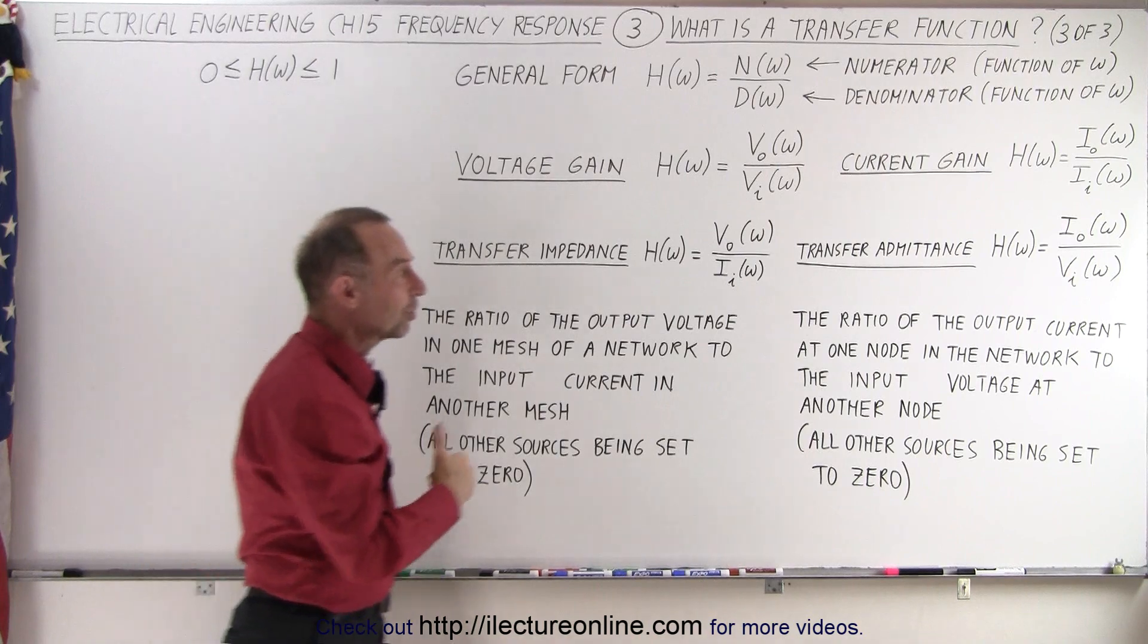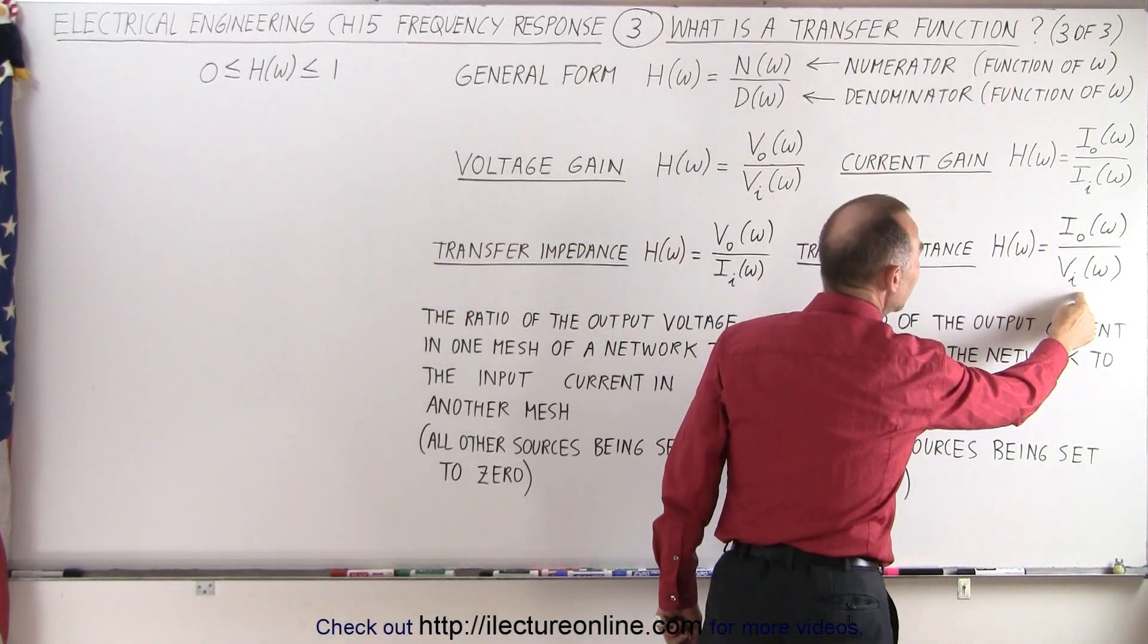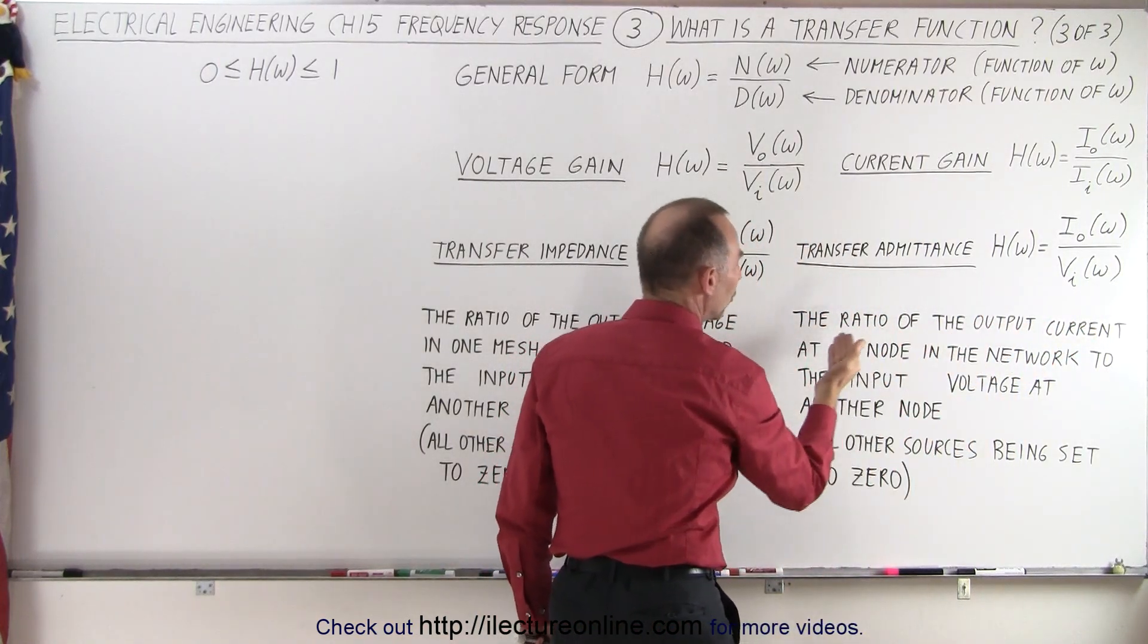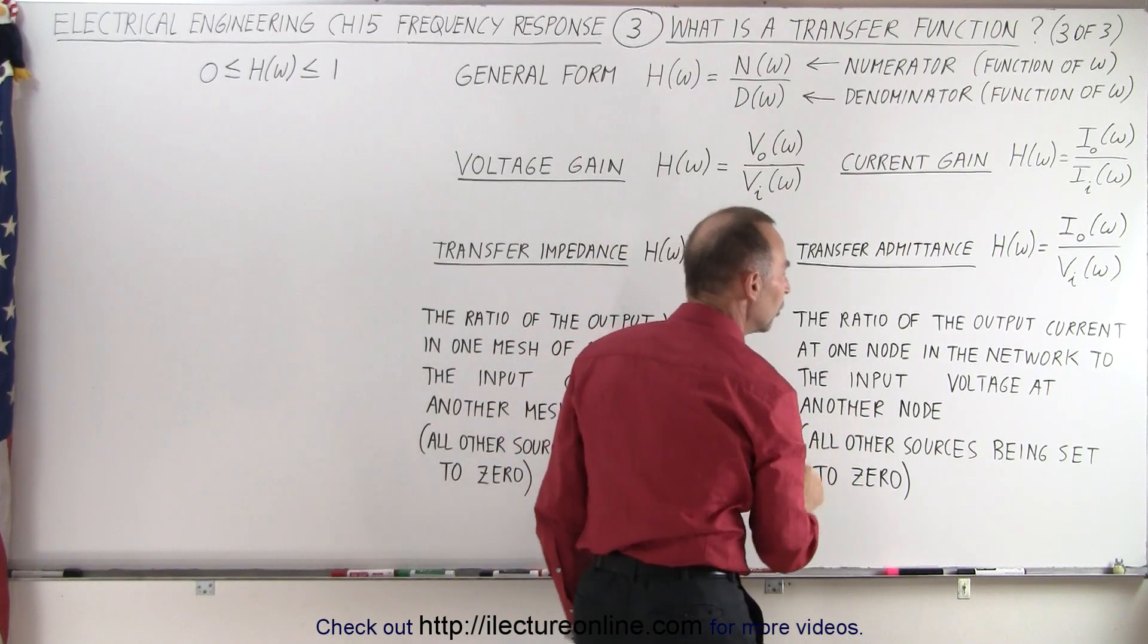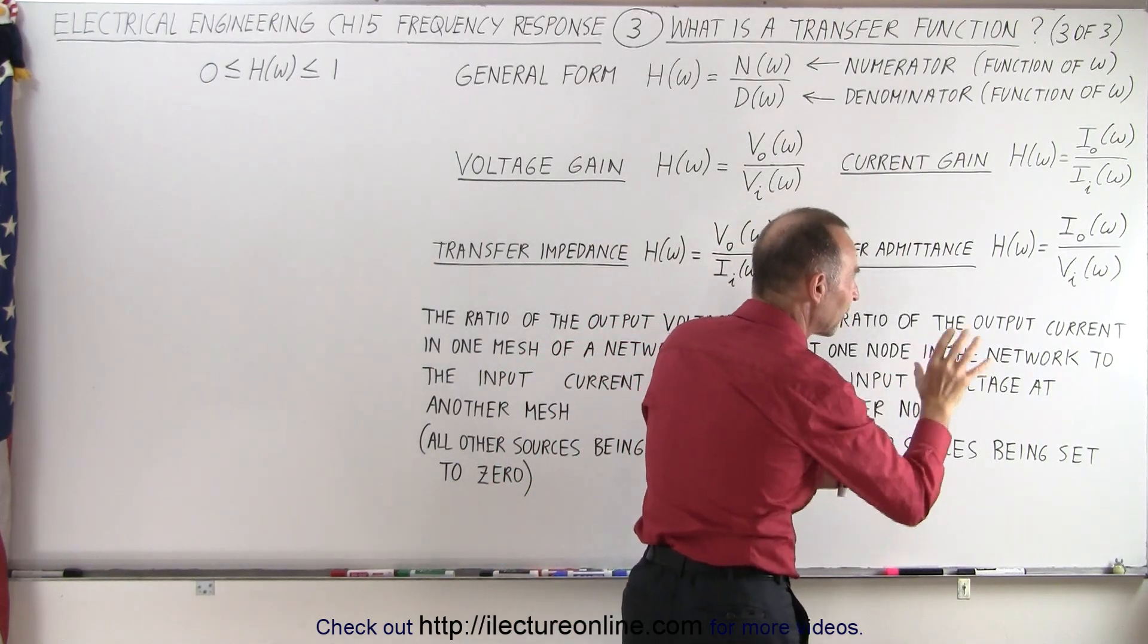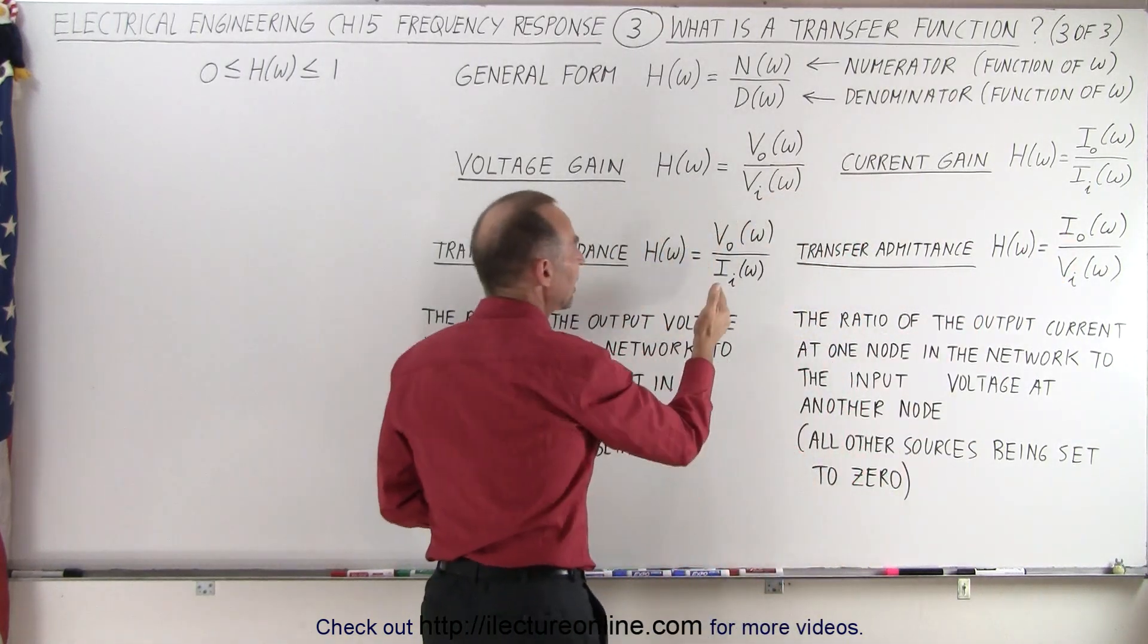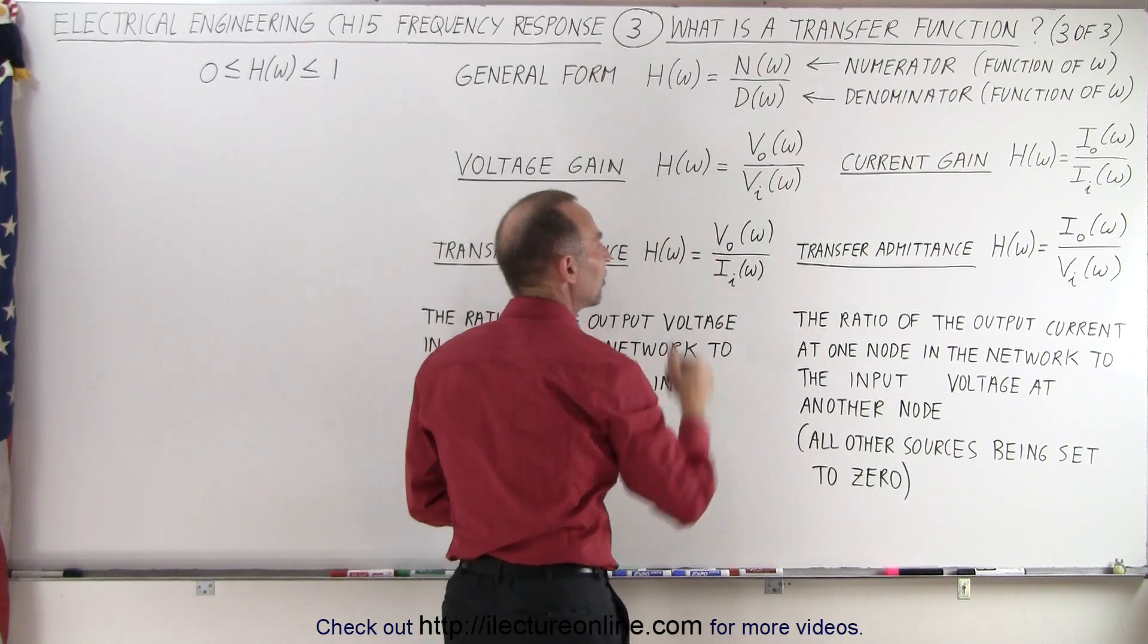The transfer admittance is the ratio of the output current to the input voltage. In other words, the ratio of the output current at one node in the network to the input voltage at another node. So, we have the input voltage driving the circuit, and we have the resulting output current.